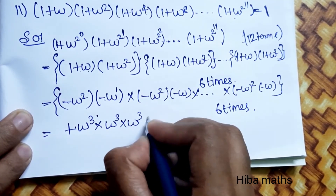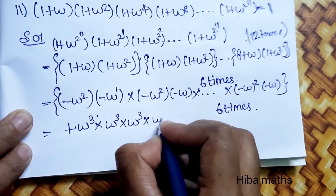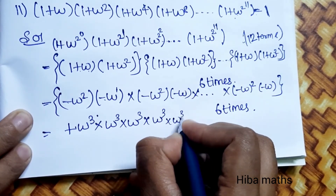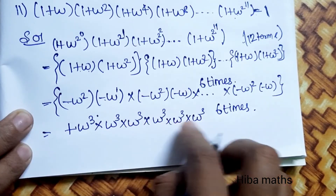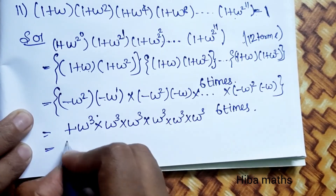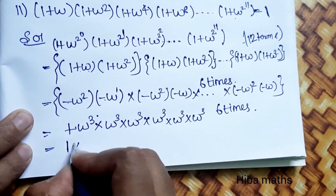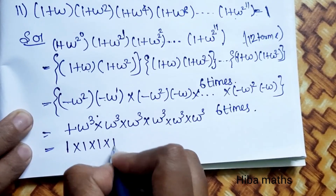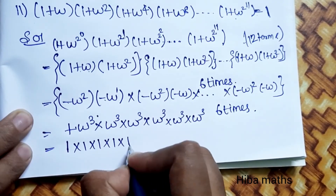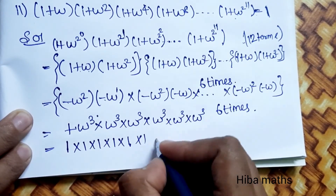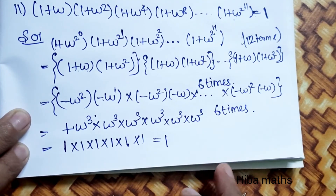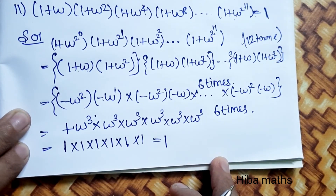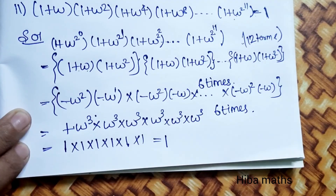We need 6 such terms: ω³ · ω³ · ω³ · ω³ · ω³ · ω³ = (ω³)^6. Since ω³ = 1, we get 1^6 = 1. So the answer is 1. That's our proof. Thank you so much for watching.